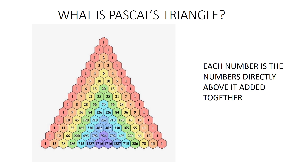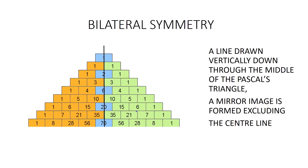In the nth row, the first entry is in the 0th column, the second entry is in the first column, and the last entry is in the nth column. Next, we are going to discuss about the properties of Pascal's Triangle.